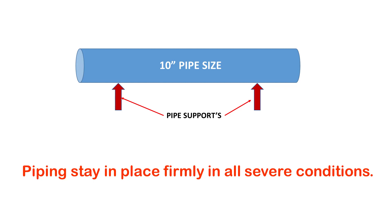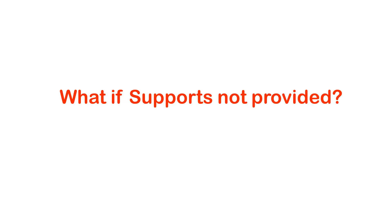Piping supports are basically provided in order to safeguard human lives and to safeguard the infrastructure of the plant. What if the supports are not provided? What may happen if pipe supports are not provided in the piping system?